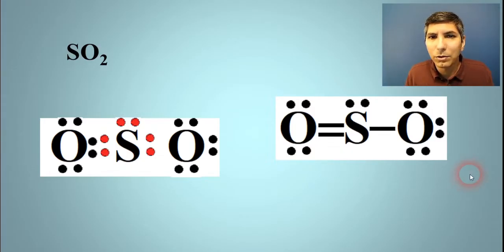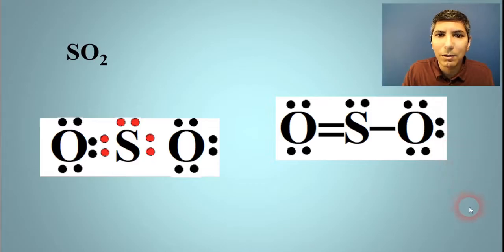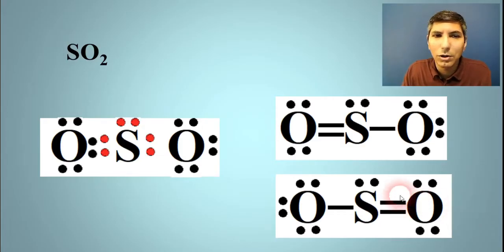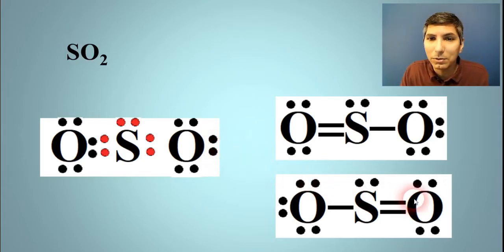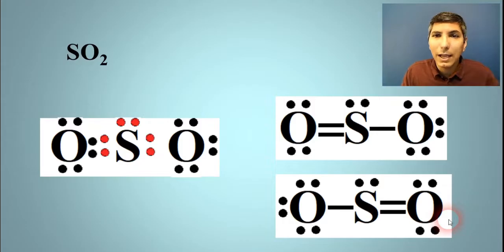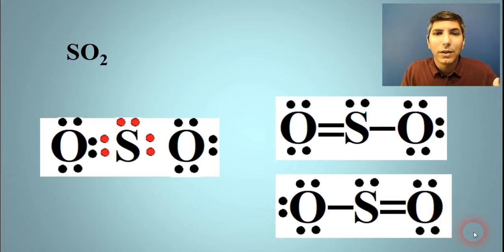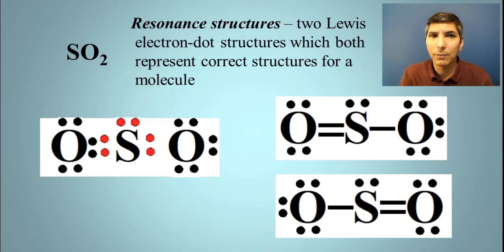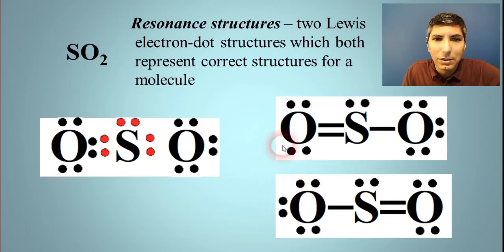When I draw the final product, it's going to look something like this. Now, you might wonder — what if on a test you drew a diagram that looked like the mirror image instead? Well, yes, that is okay. You could have taken one of the unshared pairs from the other side and brought it in to make a double bond, and that's perfectly okay. In this case, we have more than one Lewis electron dot diagram that is correct. We're going to call these resonance structures — when you have two or sometimes more than two Lewis electron dot diagrams that both represent correct structures for the molecule. So if this were on a test, either of these would be acceptable.